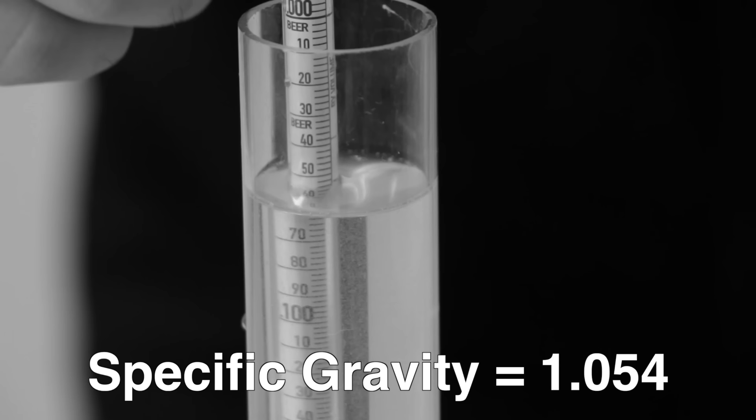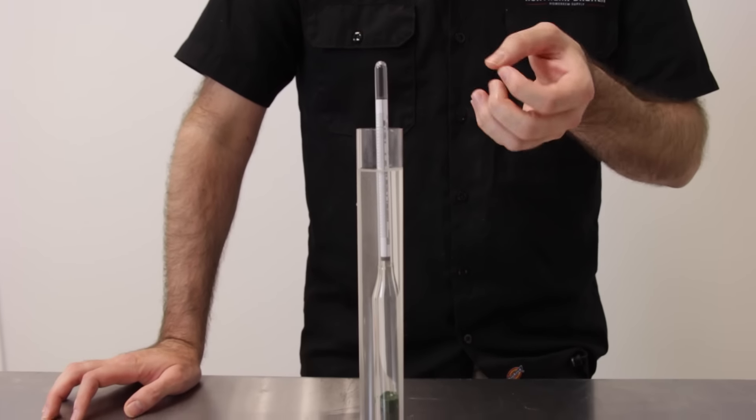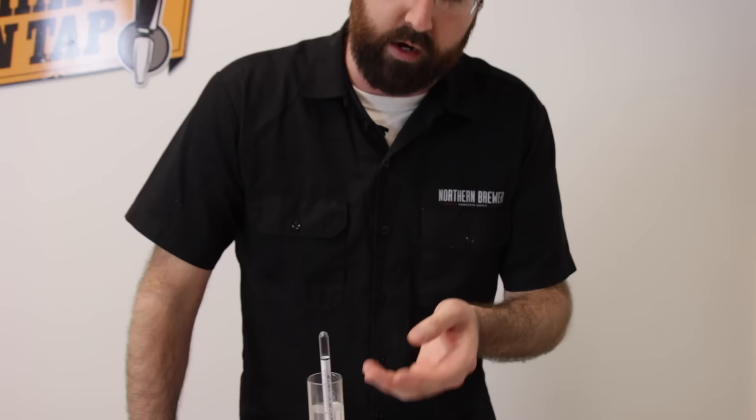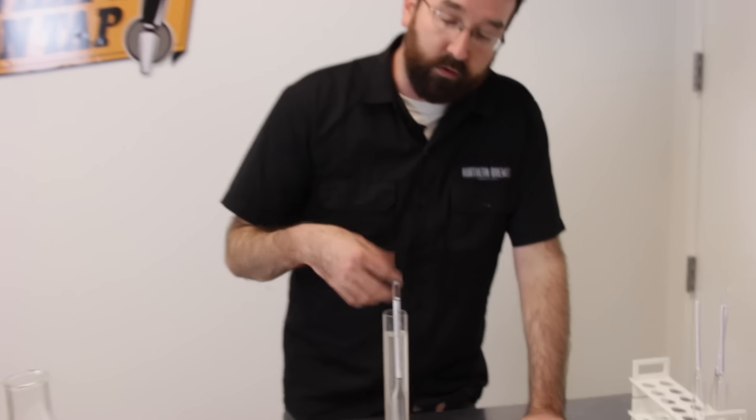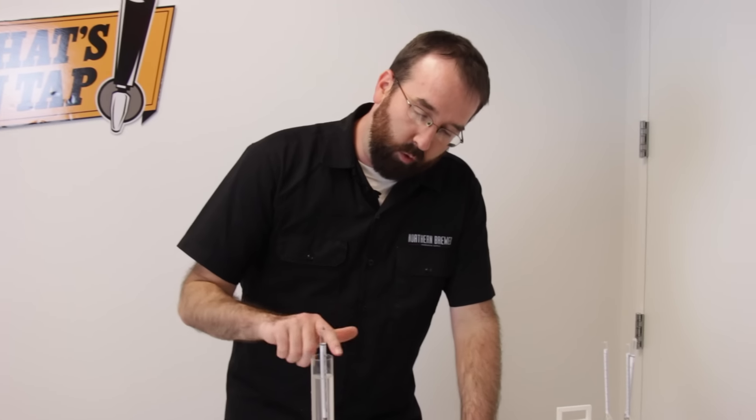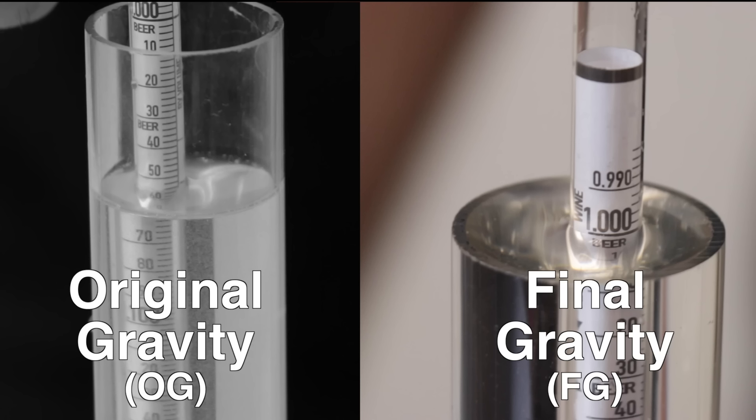Over time during fermentation, the density of the liquid will drop as the yeast consume the sugar and convert that into alcohol. Now, alcohol is lighter than water, less dense than water, and the sugar is removed, so your hydrometer will slowly start to sink again.